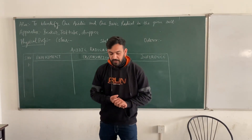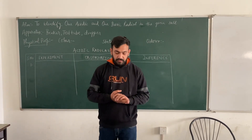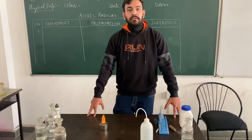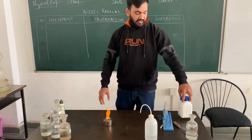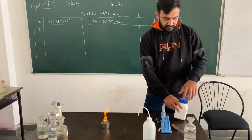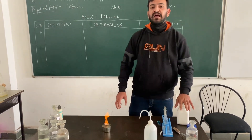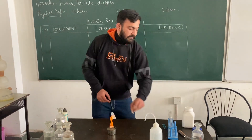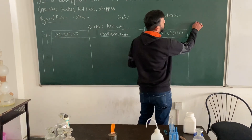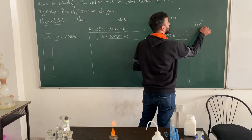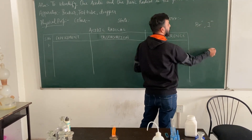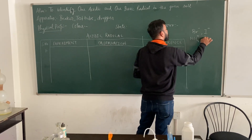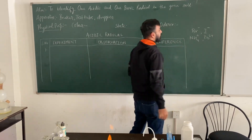Good morning all. So here we are back again. Let's continue the series of acidic and basic radicals. Now we are having salt number 3 with us. Before going to the salt 3 analysis, I would like to revise that you have already done Br⁻ and I⁻ as acidic radicals, and NH₄⁺ and Br²⁺ as basic radicals.